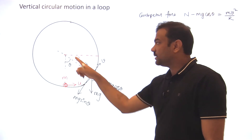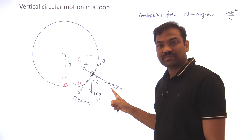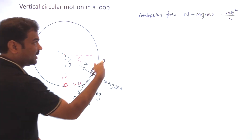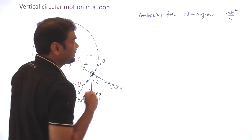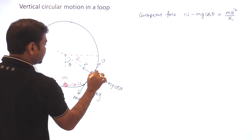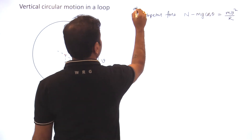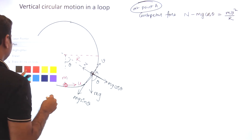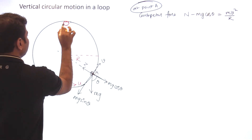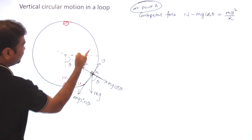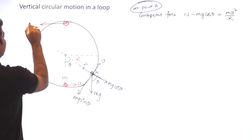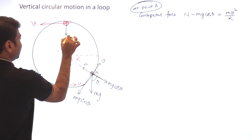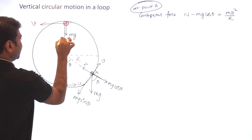N is acting towards the center, mg cos theta is acting away from the center, so net force towards the center is N minus mg cos theta = mv²/r. We can also write the v and u relation using energy conservation. This is the centripetal force equation at point A. Now similarly, suppose the ball has gone to the highest point, where it has velocity v dash.